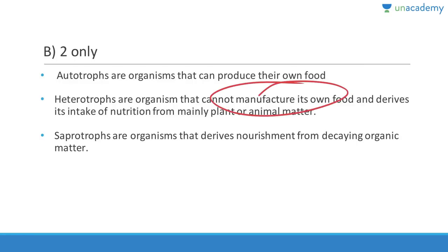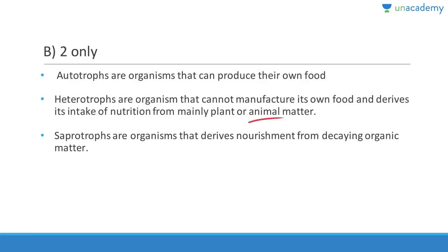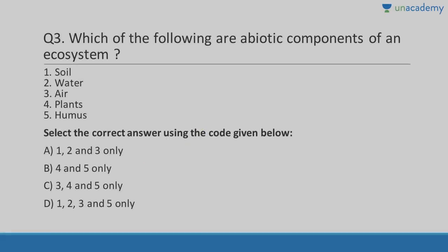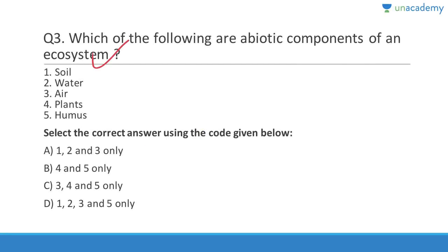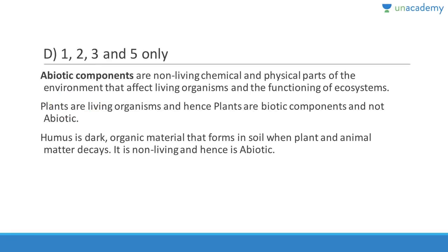Heterotrophs cannot manufacture their own food and derive their nutrition from plant or animal matter. Saprotrophs are organisms that derive nutrition from decaying organic matter. Question three: Which of the following are abiotic components? Abiotic means non-living, so soil is non-living, water is non-living, air is non-living, humus is non-living, but plants are living. Since option four is wrong, the answer is D.